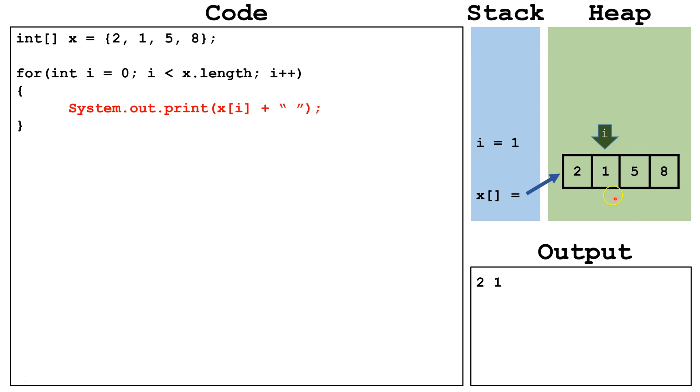We print out x index i. Index i is 1, so we print out the number 1, which is at index 1, and then a space. Get to the end of the loop, increment i by 1. Now i equals 2.